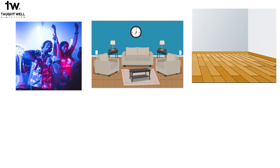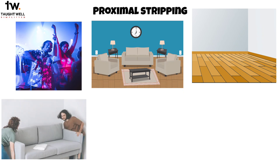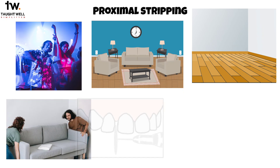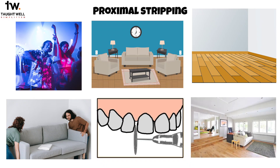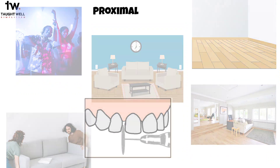One method you use is called proximal stripping, which is like rearranging furniture in the room. You selectively remove a bit of excess material from certain teeth, just like moving a bulky couch or table to create more floor space. By doing this, you make room for other teeth to align properly, just as you make space for guests to move around comfortably.